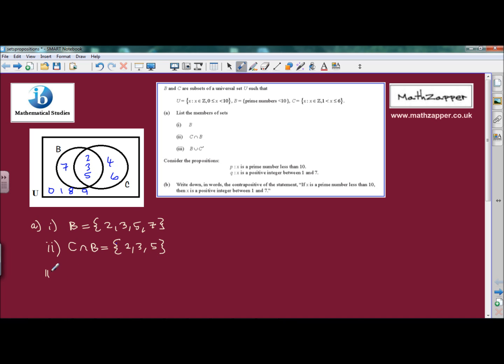Part 3 is B union C dash. What does this mean? It means it can be in B, all of set B, or anything that's not in C. So we can have this part here and the outside part as well.